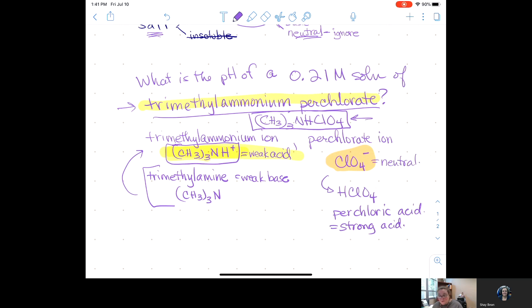And perchloric acid should be ringing some bells and whistles in your head. If you try to look them up on the Ka table, you're not going to find them, because perchloric acid is a strong acid. If you have the conjugate of a strong acid, the conjugate of that strong acid is neutral.